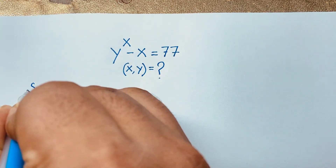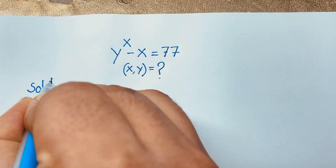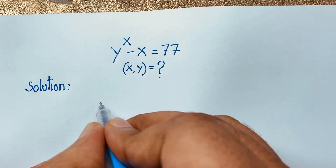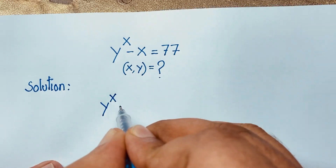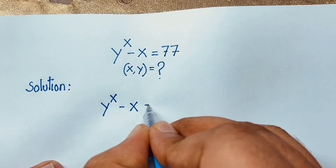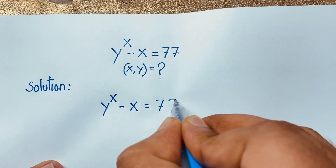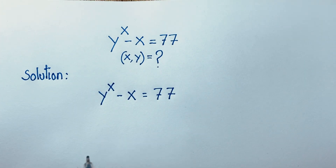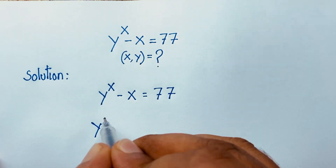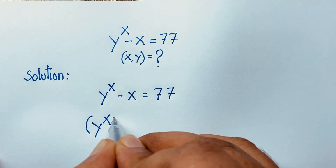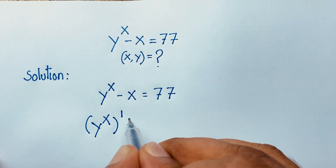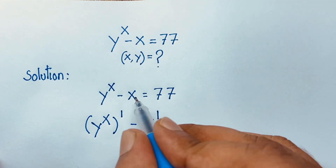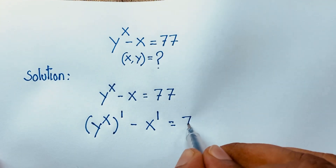So, solution. Our question: y to the power x minus x is equal to 77. At this moment, I can see this expression — it will be y to the power x in a bracket. And here the exponent is 1, minus x where the exponent is also 1, is equal to 77.